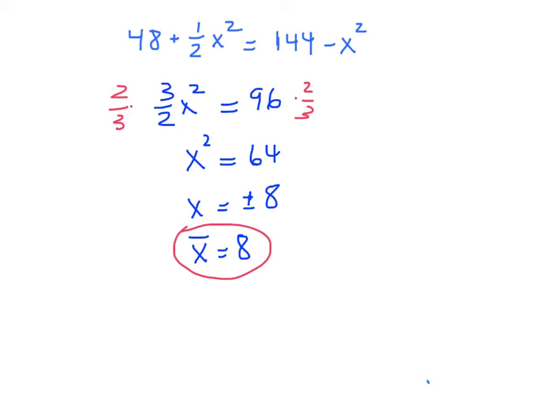Then we need to compute p-bar, so just plug 8 into one of these formulas. I'm going to use 144 minus x squared. That'd be 144 minus 64, which turns out to be 80, so we'll set our p-bar at 80.